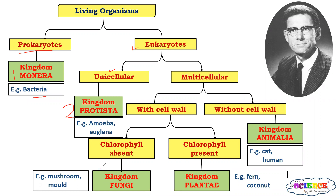Third kingdom includes Fungi. These are organisms which are eukaryotic, multicellular, they show presence of cell wall, but chlorophyll is absent — such as mushroom, molds, fungus, etc. Fourth kingdom is Kingdom Plantae, which includes all the green plants. Those are eukaryotic, multicellular and show presence of cell wall, and since they have chlorophyll present, they are autotrophic.